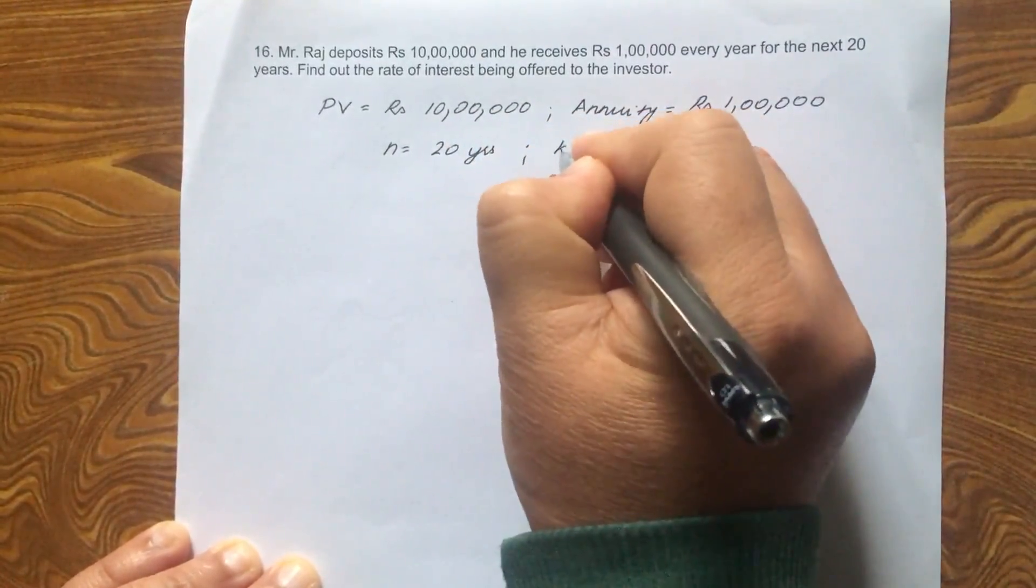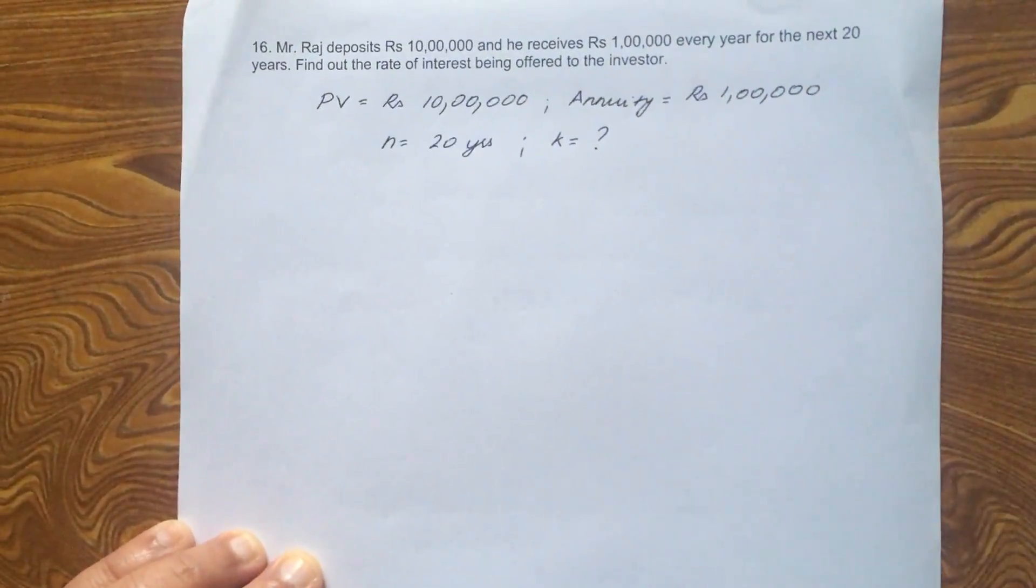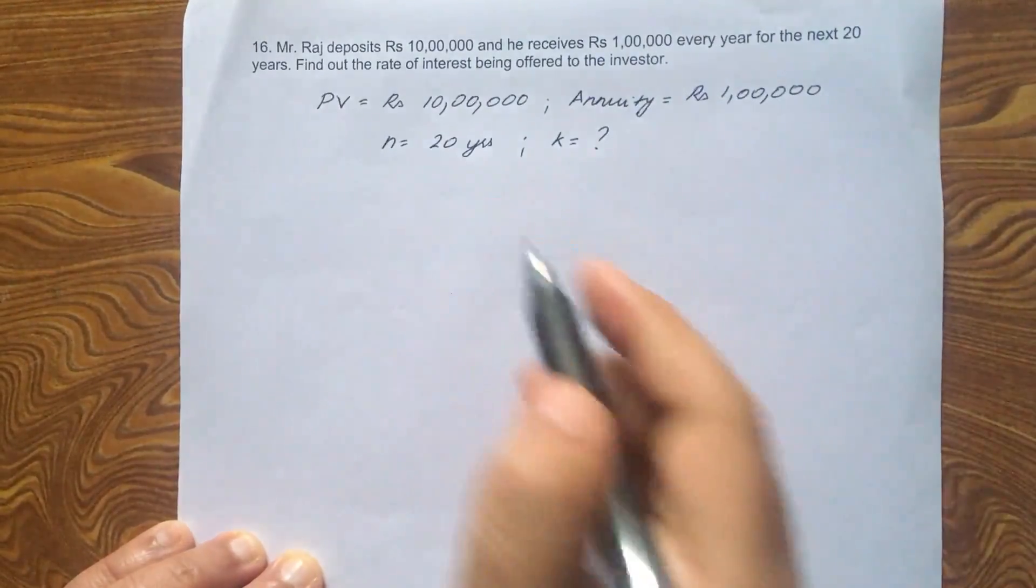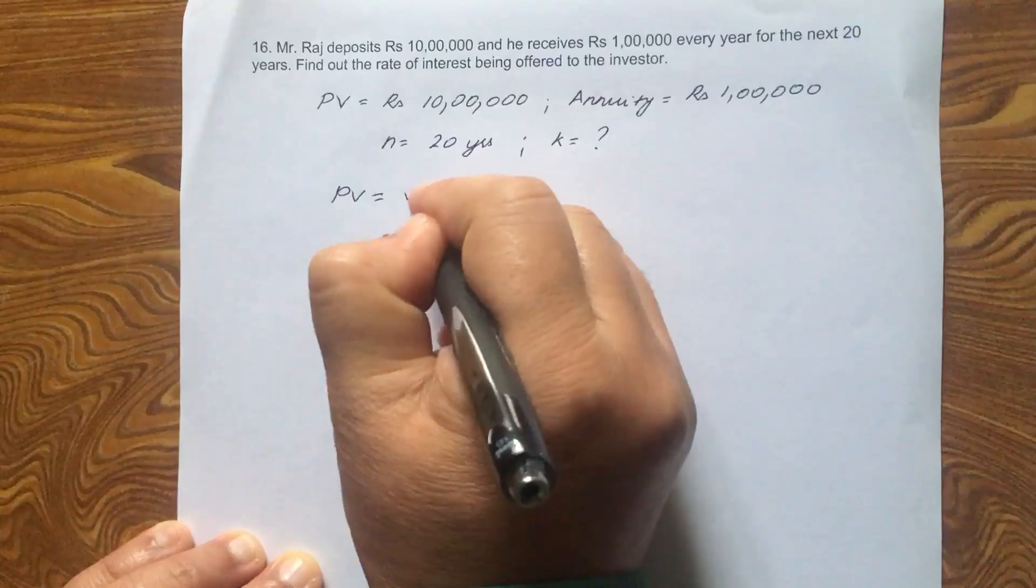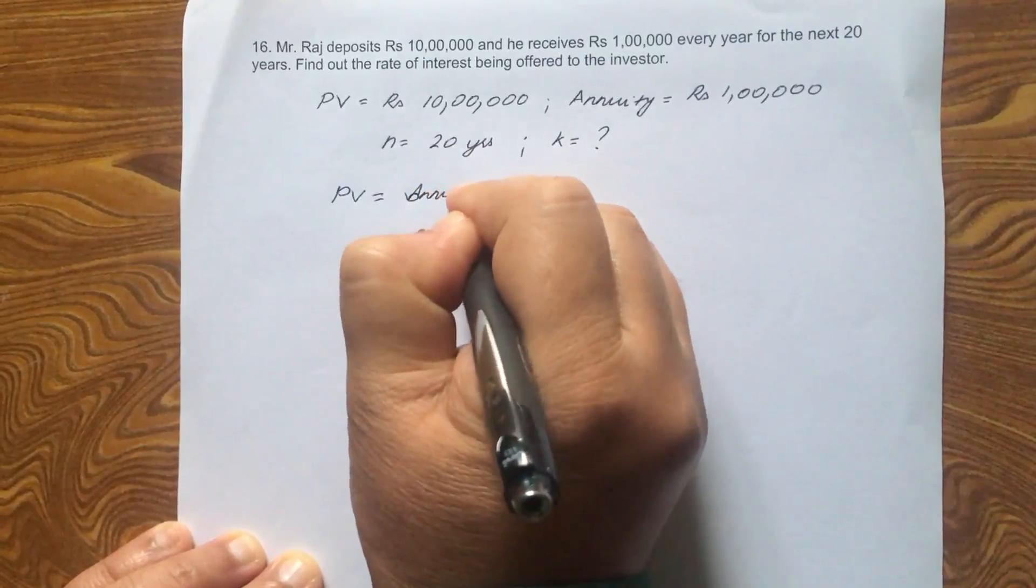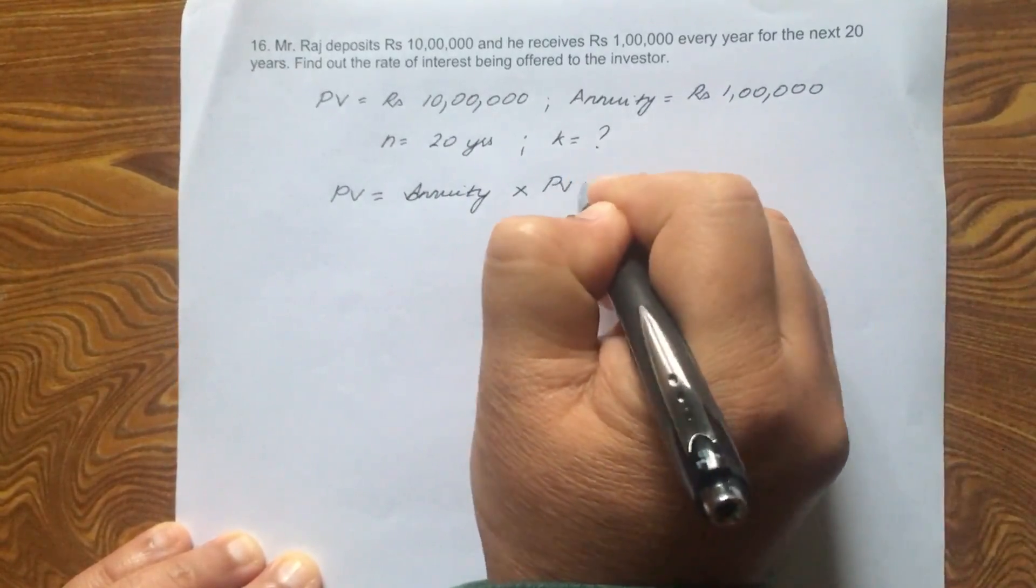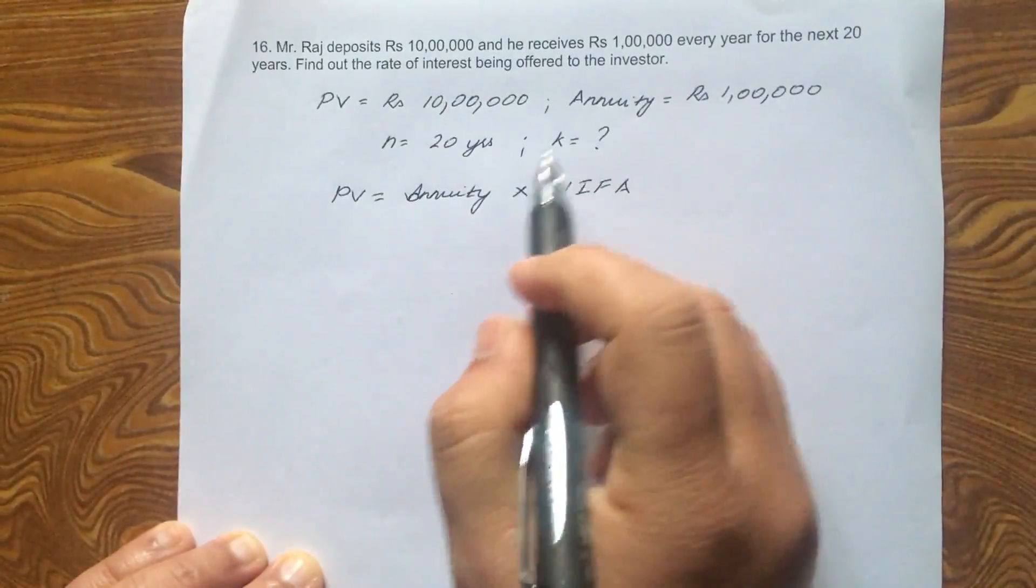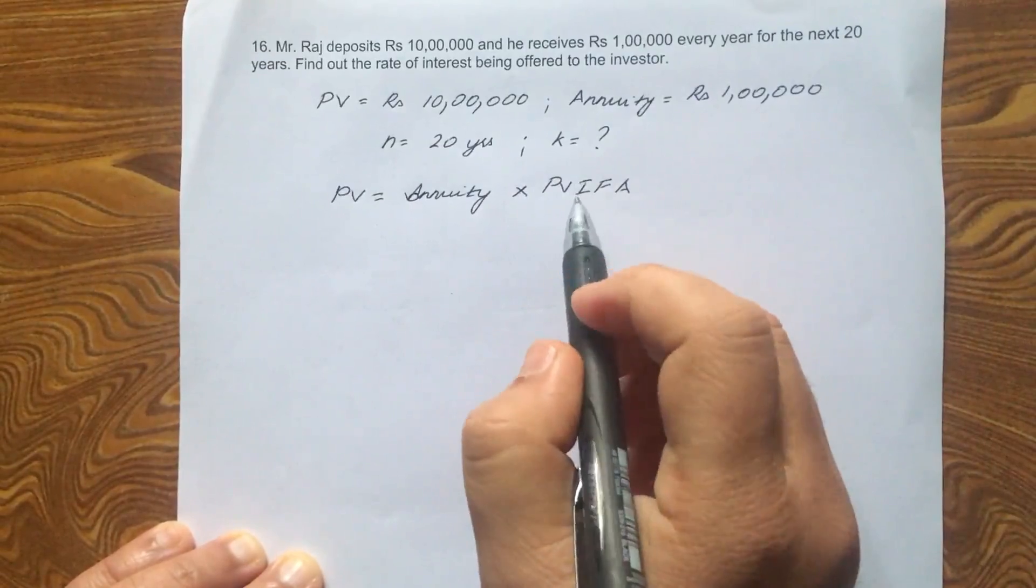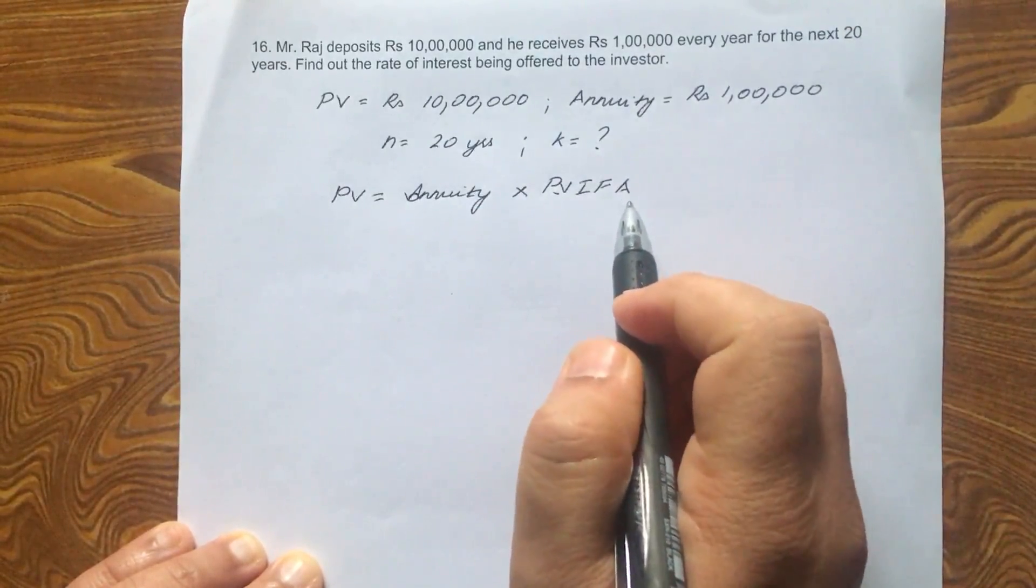What do we need to find out? We need to find out the rate of interest. So let's formulate first this problem. So present value is equal to annuity into PVIFA. Remember, the moment you see the word annuity, you have to write present value interest factor for an annuity.